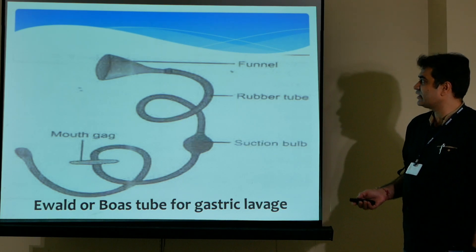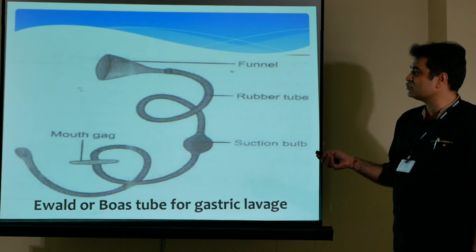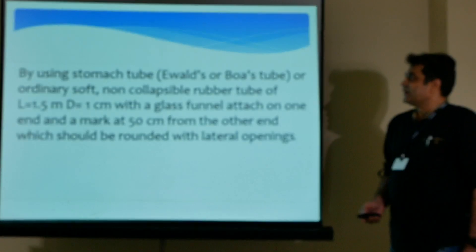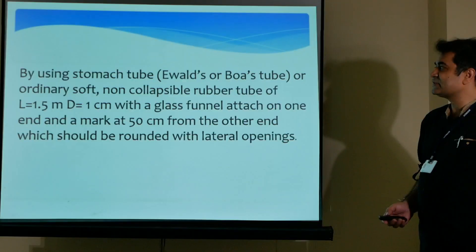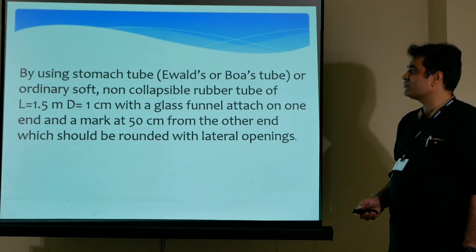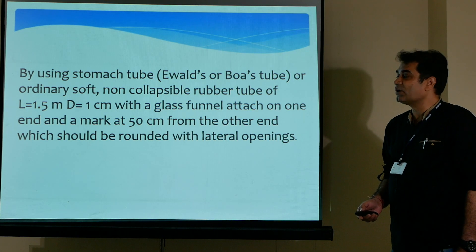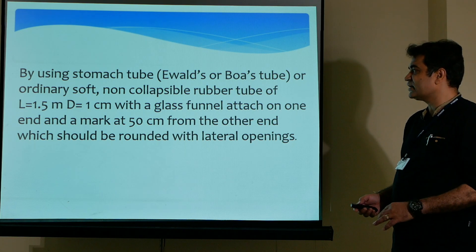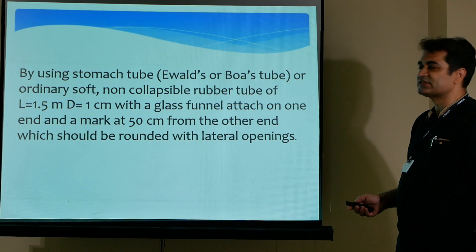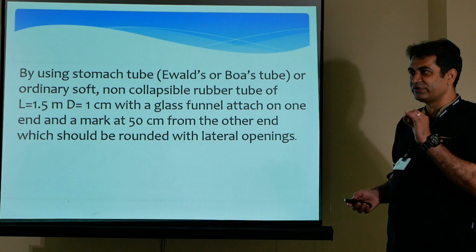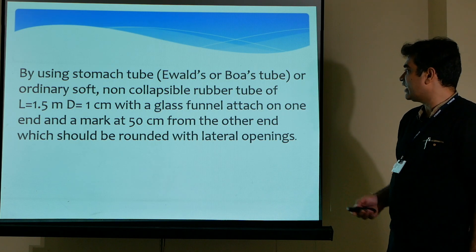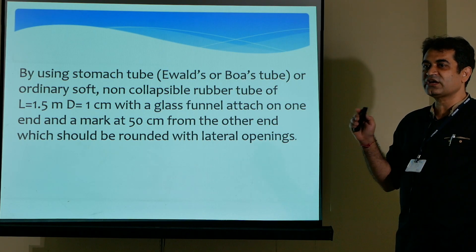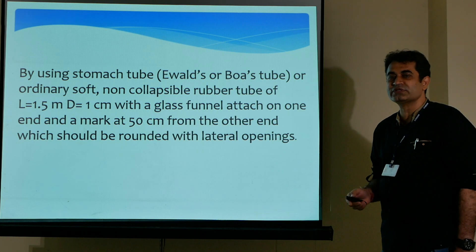The traditional Walls and Boas tube has a funnel, rubber tube, suction bulb, mouth gag, and a lower mouth part. It is an ordinary soft non-collapsible rubber tube of length 1.5 meters with a diameter of 1 centimeter, with a glass funnel attached on one end and a mark at 50 centimeters from the other end. The lower end is rounded with lateral openings, and the 50 cm mark indicates the insertion depth.